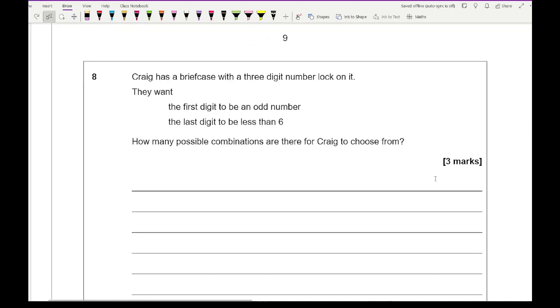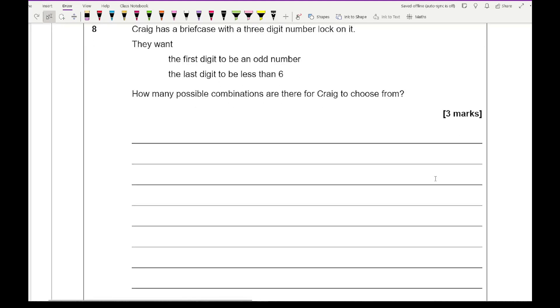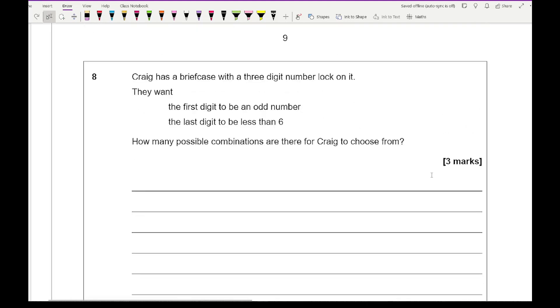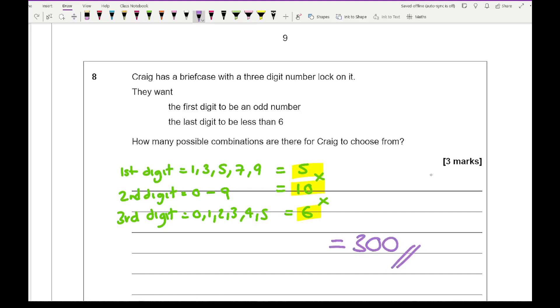Then moving on to our last question, it says that Craig has a briefcase with a three digit number lock on it. They want the first digit to be an odd number. The last digit to be less than six. How many possible combinations are there for Craig to choose from? Well in terms of the first digit, it has to be an odd number. So the odd numbers are going to be 1, 3, 5, 7, and 9. So there's five numbers to choose from. The second digit, not really bothered about whatever that is. So there are 10 possible numbers, again going from 0 to 9. Then for the third digit, well this has to be a number that's less than 6. So it's going to be 0, 1, 2, 3, 4, and 5. So there are six numbers to choose from there. So then if I multiply those three numbers together, so I've got 5 times 10 times 6, it gives me a final answer of 300. And there is my final answer.